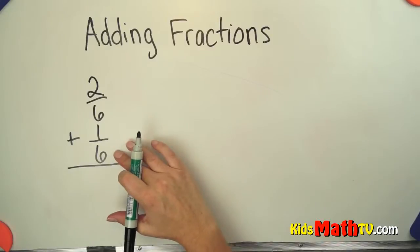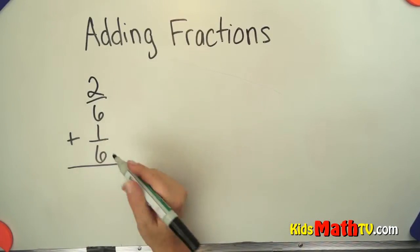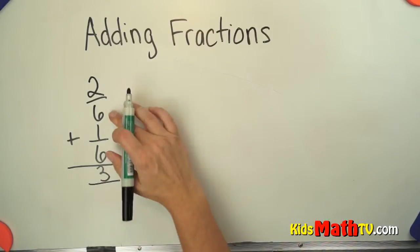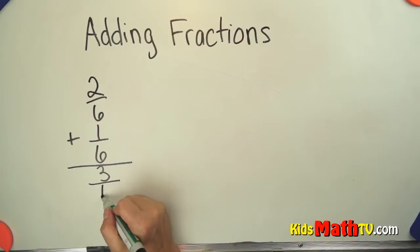the denominators are the same so we can add them together. We simply add the numerators: 2 plus 1 is 3, and the denominator stays the same. We're adding sixths together, so we have 3 sixths.